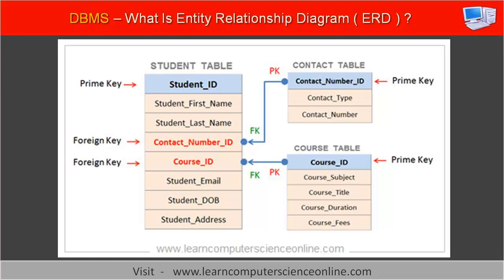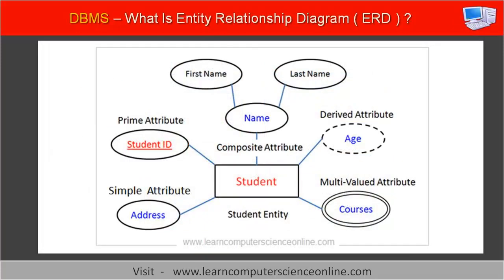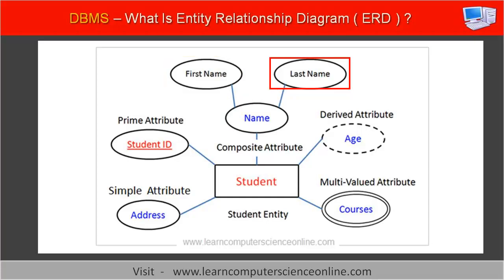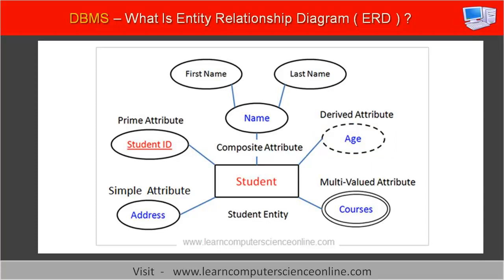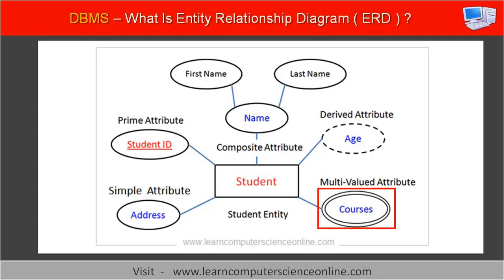The prime attribute can function as a primary key that can uniquely identify each record in the relational table. In an ER diagram, the prime attribute is shown by an underlined oval shape. A composite attribute, such as student name, can consist of two attributes — for example, first name and last name. A derived attribute, such as student age, is calculated and its value depends upon the date of birth attribute; it is not stored in the database and is shown by a dotted-line oval shape. A multi-valued attribute, such as student mobile number, can have multiple values and is shown by a double-line oval shape.